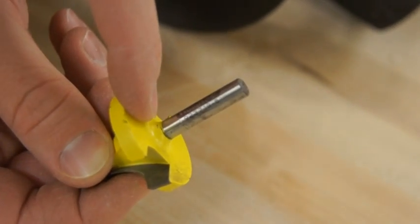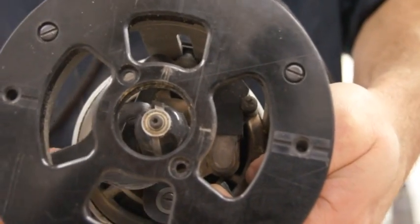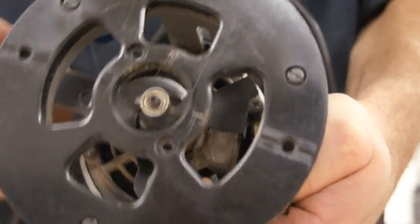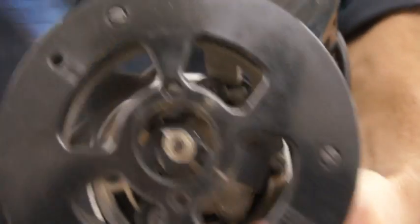Always be sure the bit is tightly locked into the collet by turning the nut in a clockwise or right direction when viewing the router from the bottom.